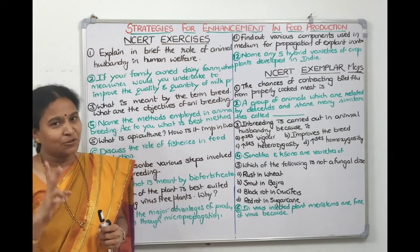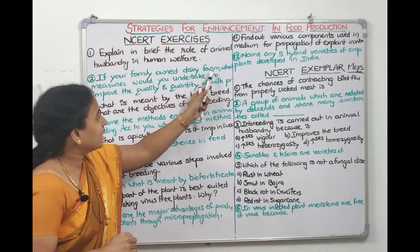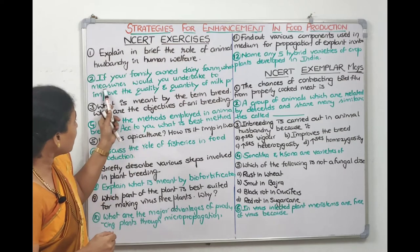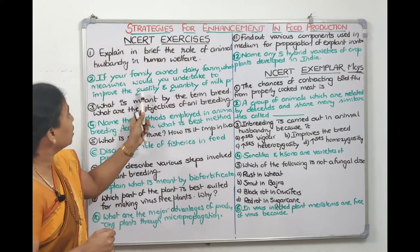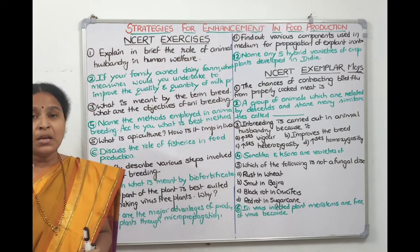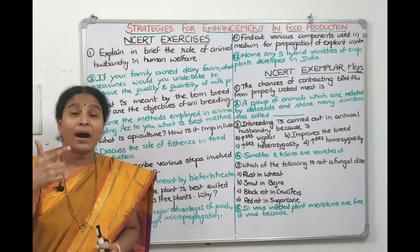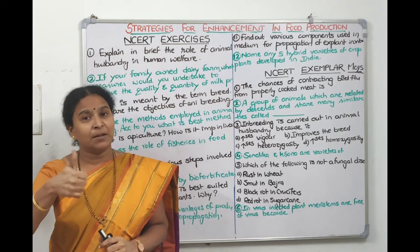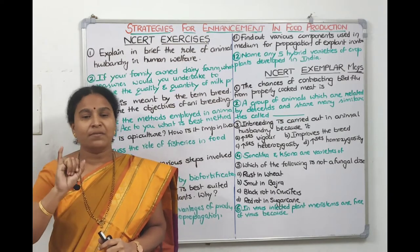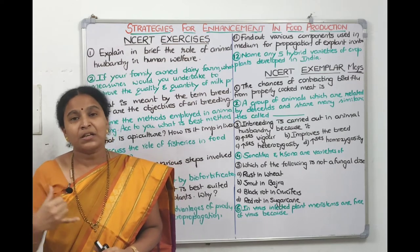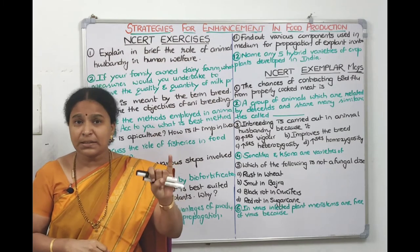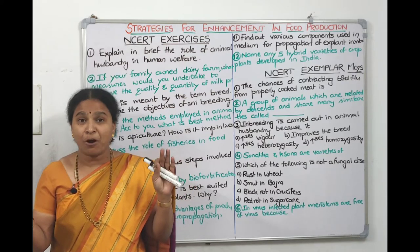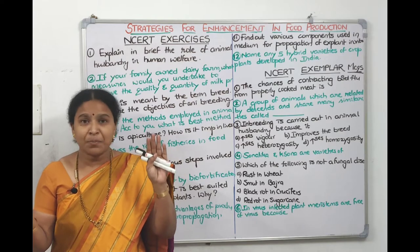The second question: if your family owned a dairy farm, what measures would you undertake to improve the quality and quantity of milk production? The first and foremost thing is which breed you are selecting — depending on the breed, quality and quantity will depend. The breed should be disease-resistant and high-yielding. The shed should be properly ventilated and have a proper water supply.